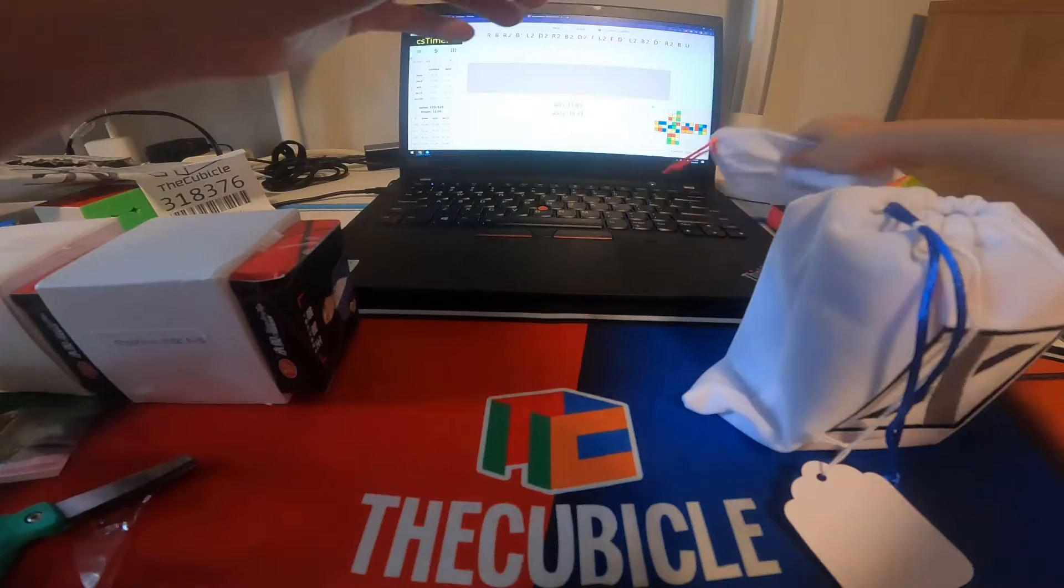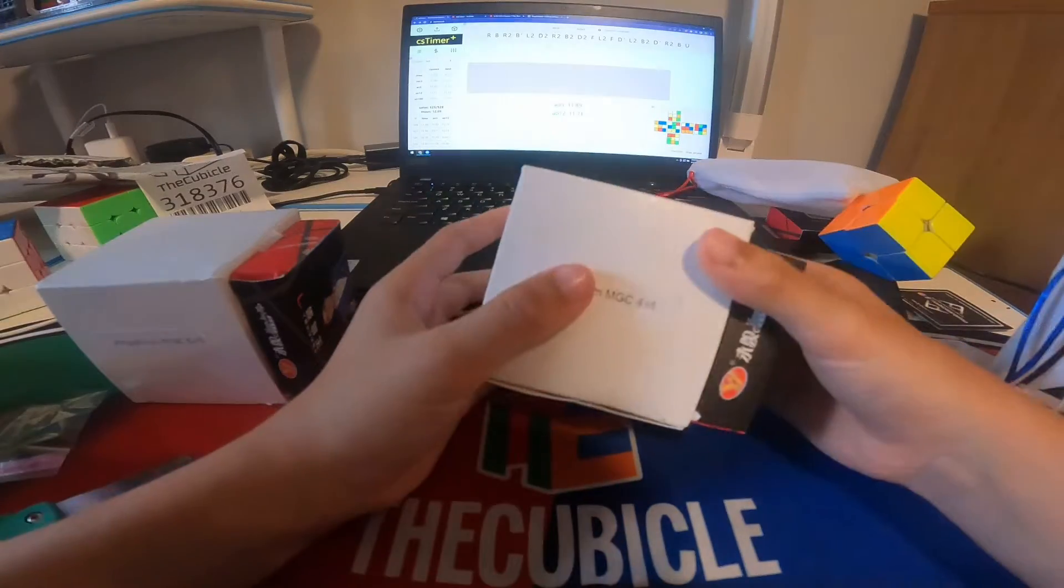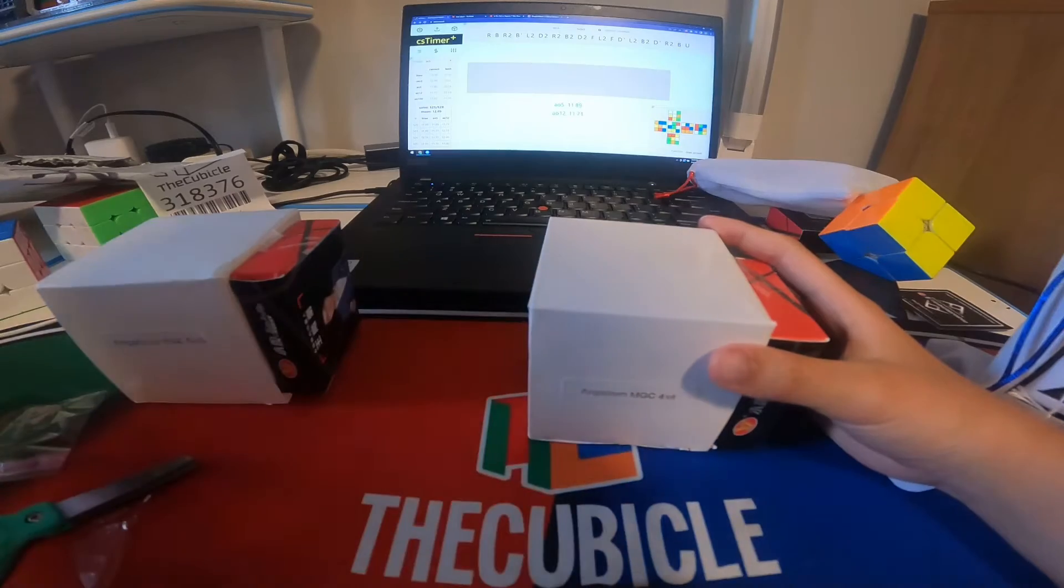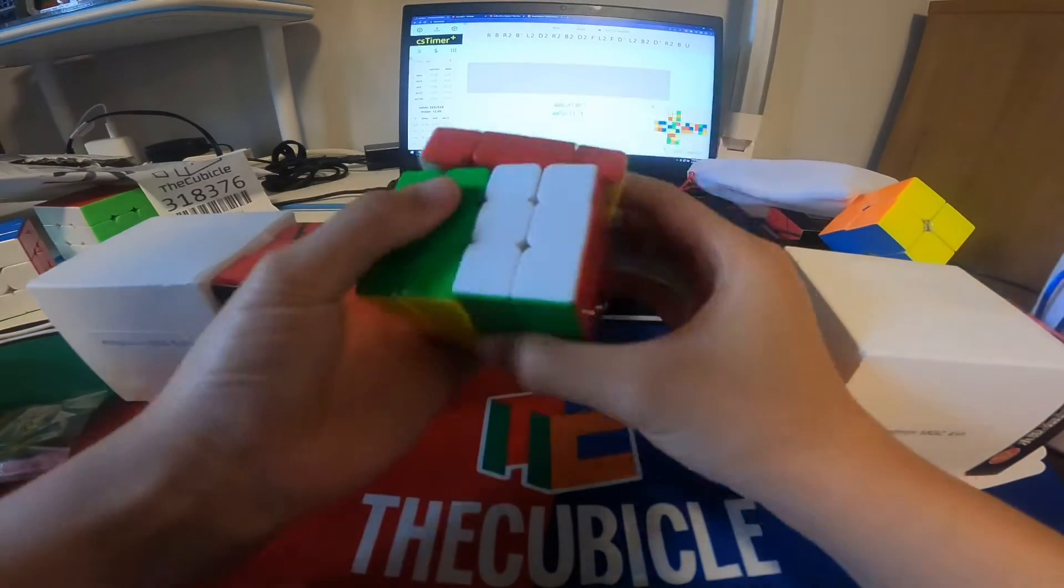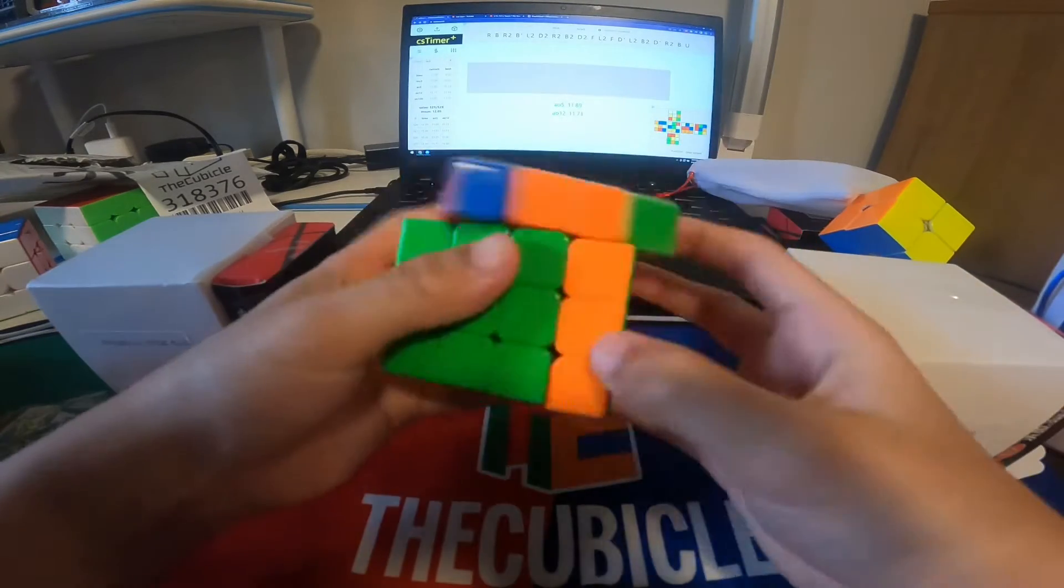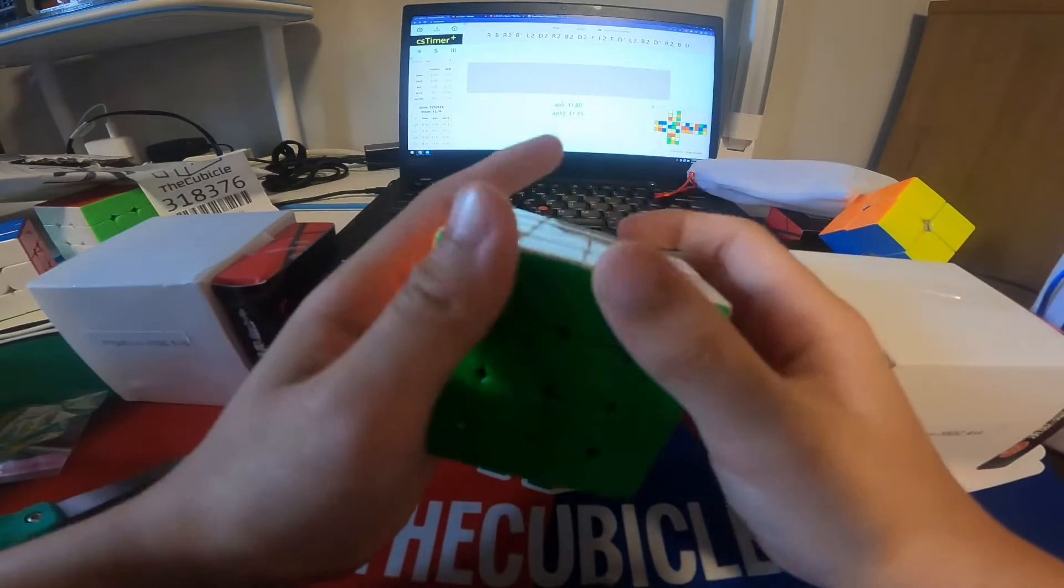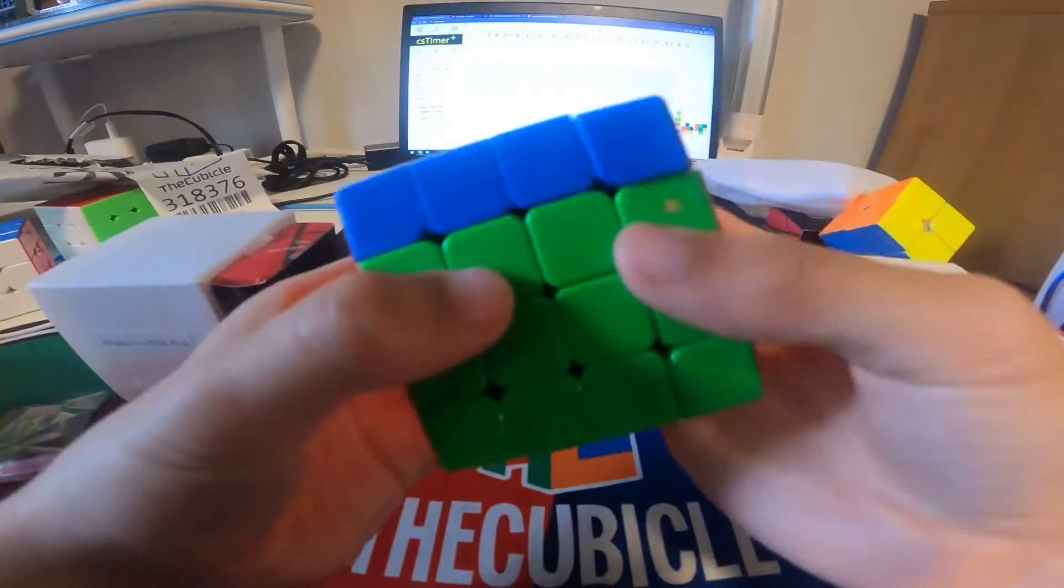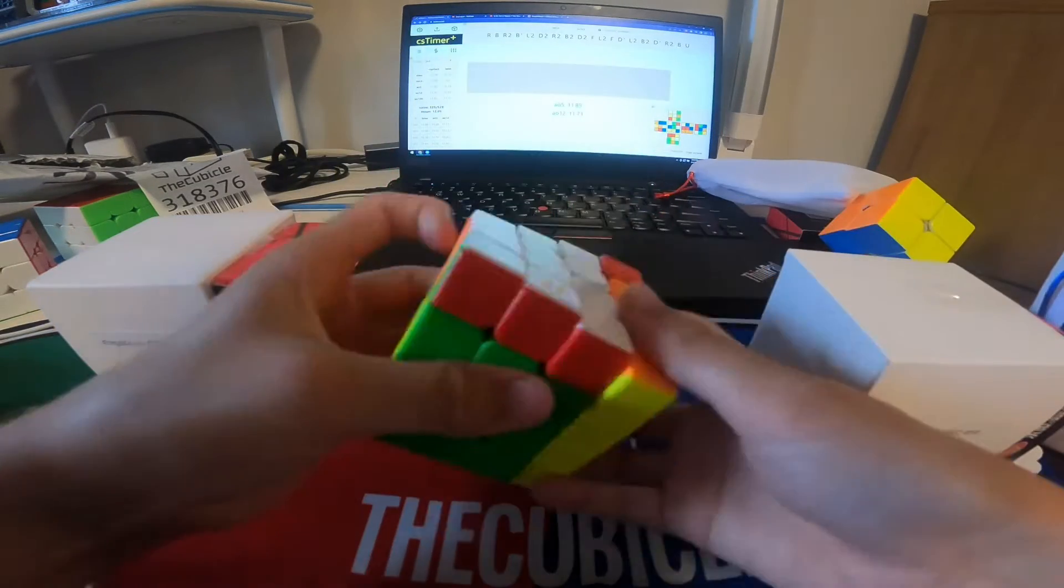Our next cube is the Angstrom MGC 4x4. I bought this for a competition because a lot of people are switching from the Aosu to the MGC 4. This is my current main, the Aosu to the MGC 4.